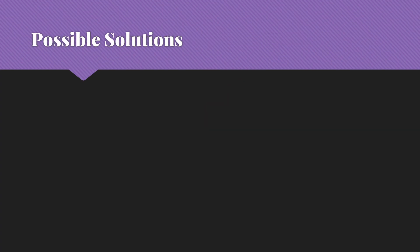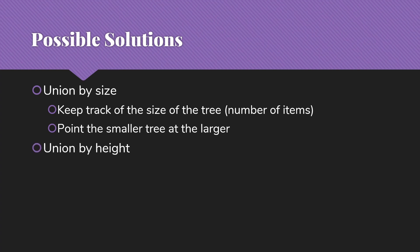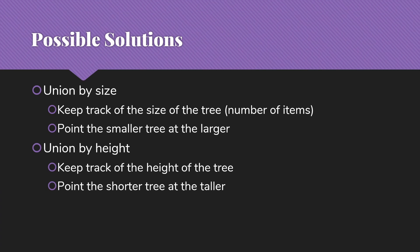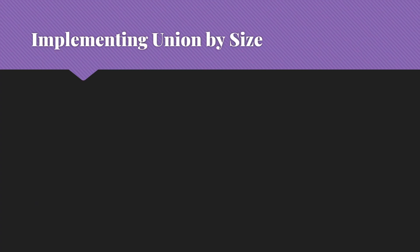There are two possible solutions to this problem. One is called union by size, where we keep track of the size of the tree — the number of items in it — and always point the smaller tree at the larger if they're different sizes. We also have union by height, where we keep track of the actual height of the tree and always point the shorter tree at the taller tree if they have different heights. If sizes or heights are the same, we follow our arbitrary rule, pointing the second one at the first.